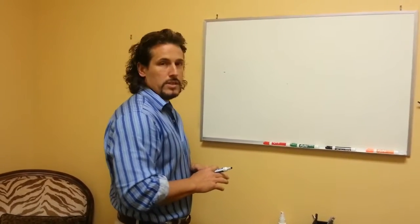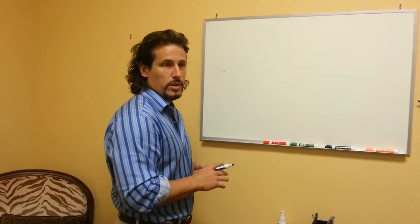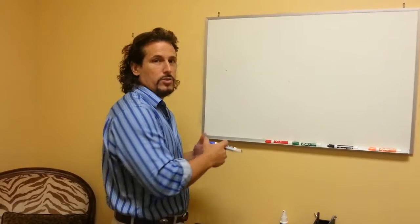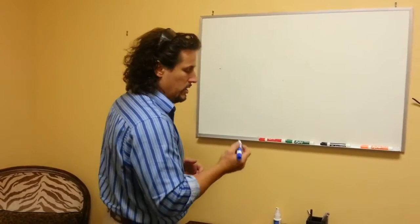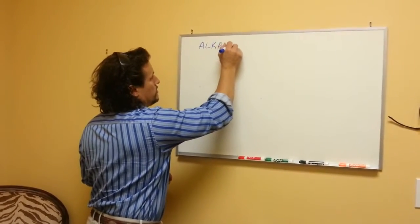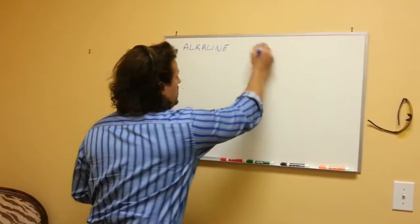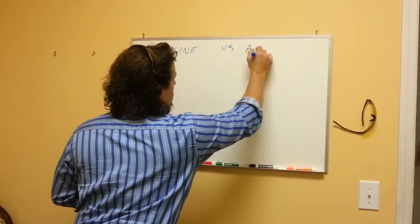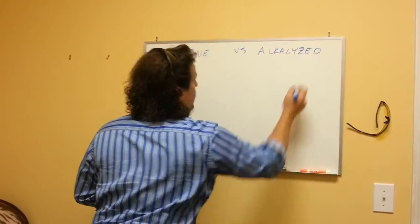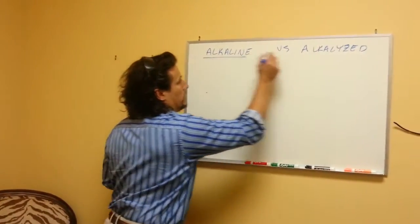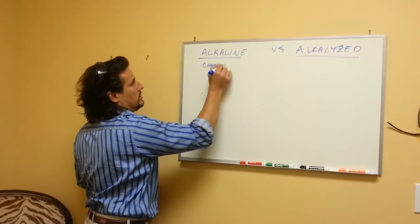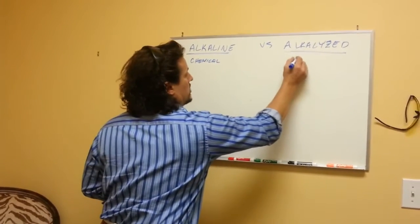There seems to be a lot of questions about what is alkaline water, what is alkalized water, is there a difference, why do the pH strips not work on this water, why do the drops work on this water. So here's a brief explanation. The question becomes: what is the difference between alkaline water versus alkalized water? The short answer is this is a chemical change versus this is an electrical change.